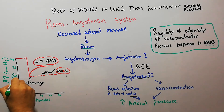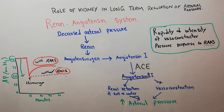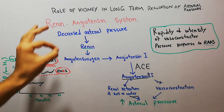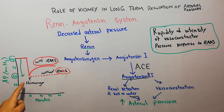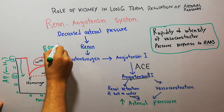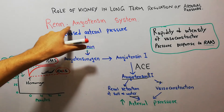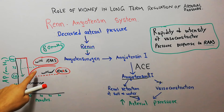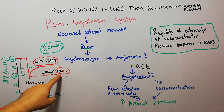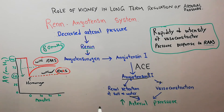When the subject has an intact renin-angiotensin system, it comes into action and increases arterial pressure back to around 80 mmHg. However, if the renin-angiotensin system has been blocked in this subject — without RAS — the arterial pressure only rises to around 60 mmHg, a rise of only 10 mmHg.